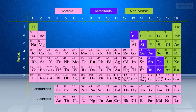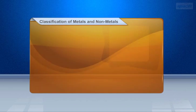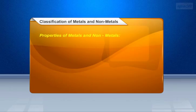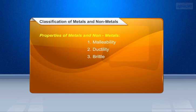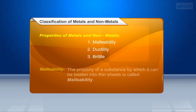Before we move to metals and non-metals, let us understand the properties of metals and non-metals. The properties of metals and non-metals are: Malleability, Ductility, and Brittle.